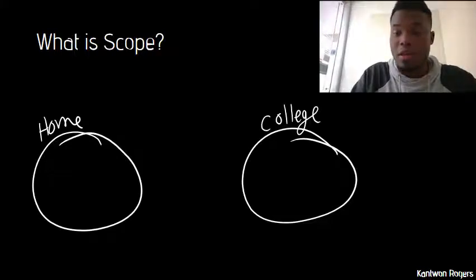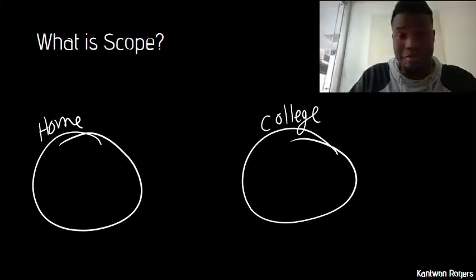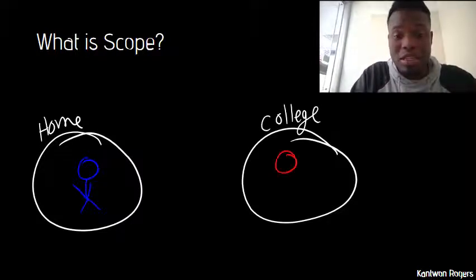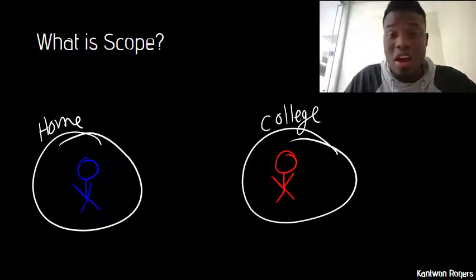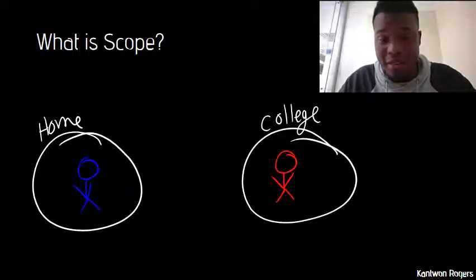It's very possible that you know multiple people named Jason. Let's say I have a friend named Jason at home - this is Jason at home - and let's say I have a friend named Jason in college. Depending on where I am, there's a certain scope of knowledge that I have.